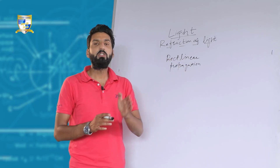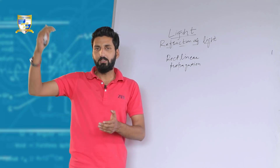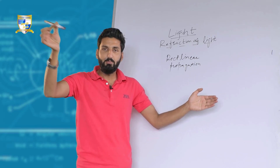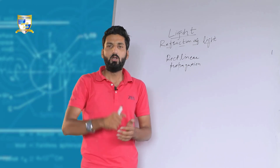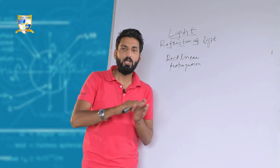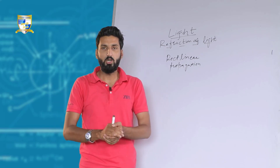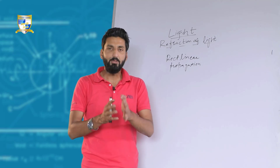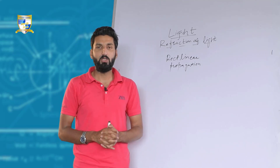If we talk about a particular medium — for example, light coming from a bulb traveling to a point — it's propagating across one medium only, that is air. Or we can take the example of water: if light is traveling inside water, the medium is water and the light would travel in a straight path. So in a particular medium, light would have a straight path.